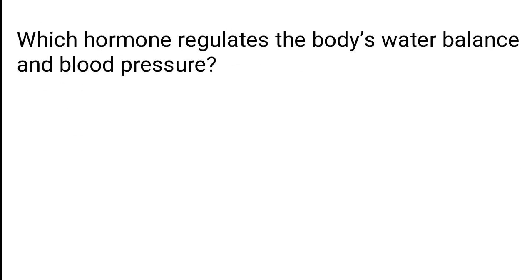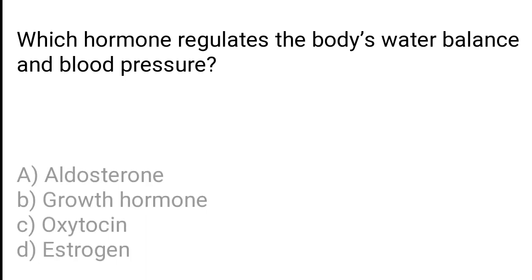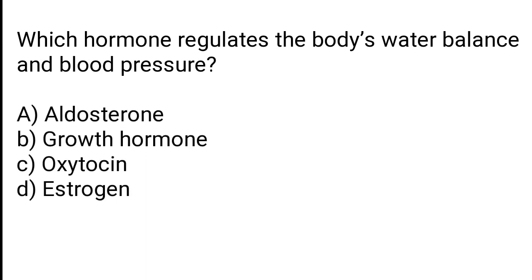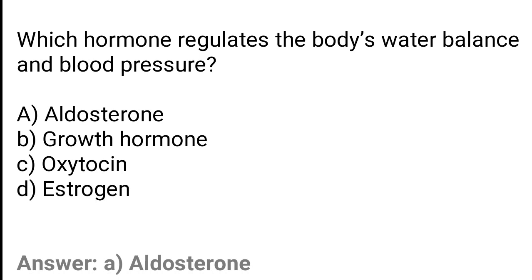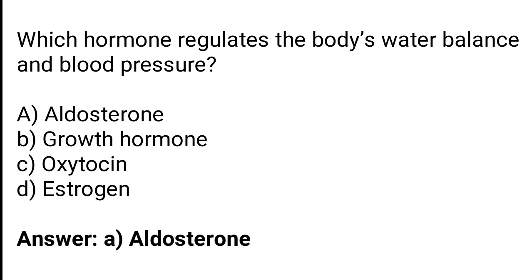Which hormone regulates the body's water balance and blood pressure? Aldosterone, growth hormone, oxytocin, estrogen. The correct answer is option A: aldosterone hormone regulates the body's water balance and blood pressure.